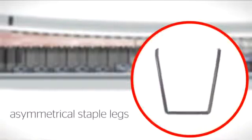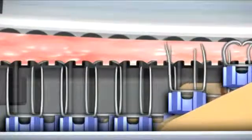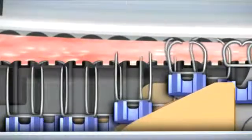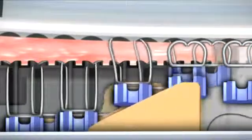Asymmetrical staple legs compensate further for tissue slippage effects on each staple leg due to tissue flow across a wide range of tissue thicknesses. A slightly increased bent staple tip on the distal leg improves the trajectory as the staples move toward the anvil pockets, resulting in fewer malformed or unformed staples.